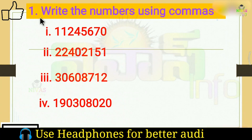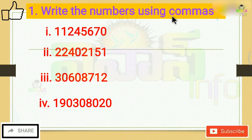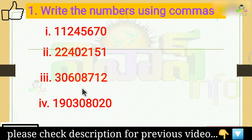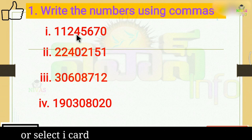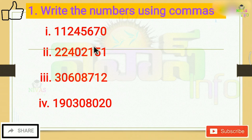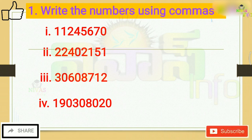The first question in Exercise 3 is to provide the numbers using commas. First of all, what are commas? Commas are used to separate place values. We know that the purpose of commas is to separate place values.